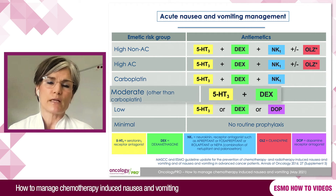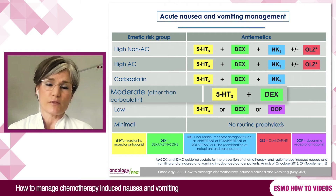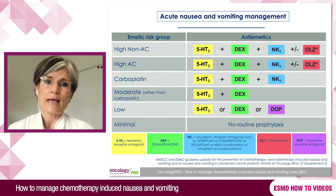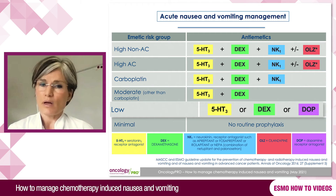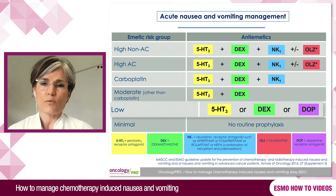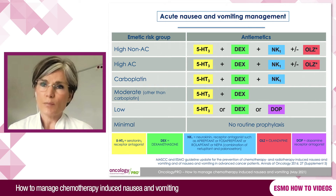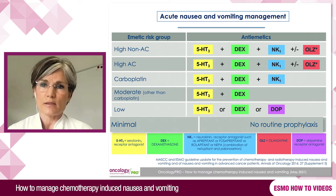Patients receiving moderately emetogenic chemotherapy should receive a doublet of a 5-HT3 receptor antagonist and a corticosteroid. Patients in the low emetogenic risk group receive only a single agent — either a 5-HT3 antagonist, corticosteroid, or dopamine D2 receptor antagonist. For the minimal emetogenic risk group, there is no routine prophylaxis.